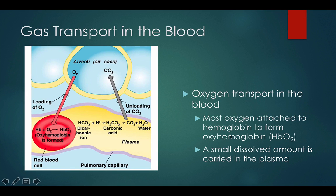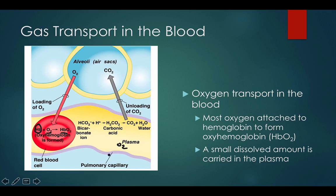Oxygen transported in the blood is attached to hemoglobin in the form of oxyhemoglobin — Hb plus O2 forms HbO2. A small dissolved amount is also carried in the plasma, but most of the oxygen is carried on the hemoglobin.